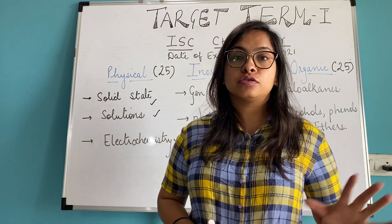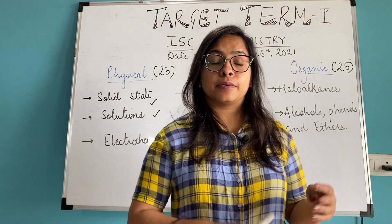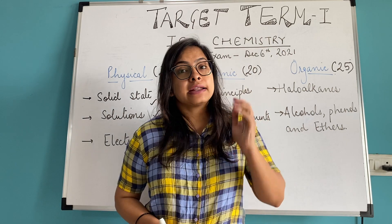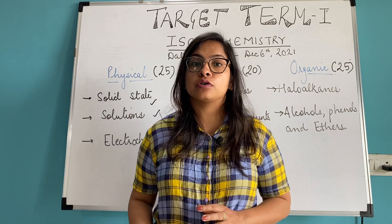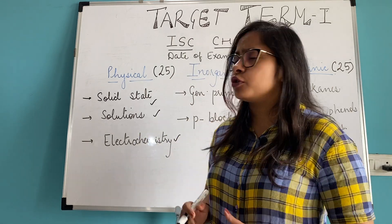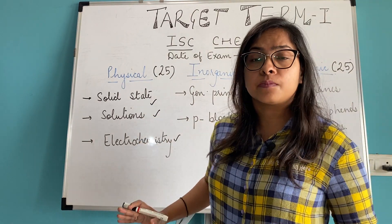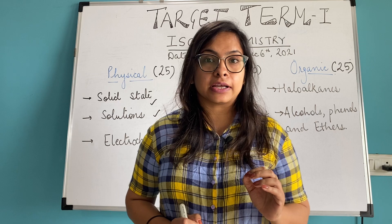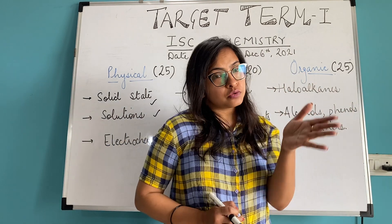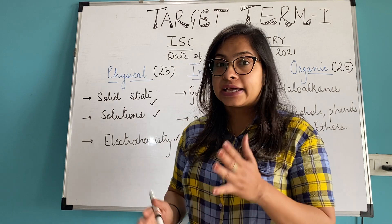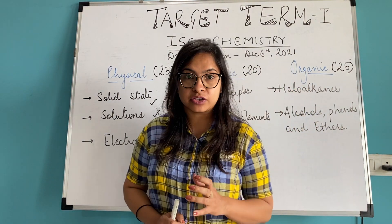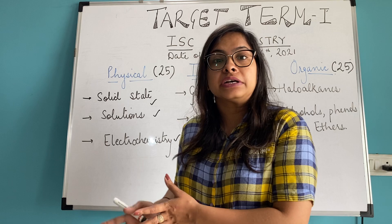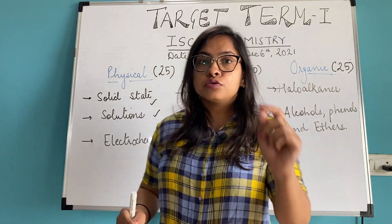Coming to Solutions and Electrochemistry - what should be done? In Solutions, Raoult's Law-based questions will come in large numbers, and then colligative properties: elevation in boiling point, depression in freezing point, and osmotic pressure - numericals come in these. From my personal experience, students get very confused here. But always remember - whenever you are solving a numerical, whether it is from Solutions or Electrochemistry, all the data will be given to you. You will get only one unknown parameter. So basically you have to move from the known to the unknown.